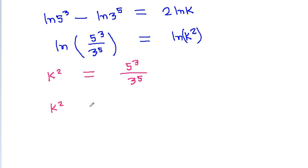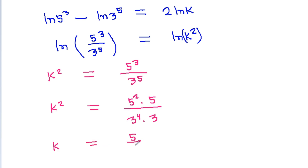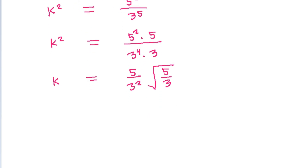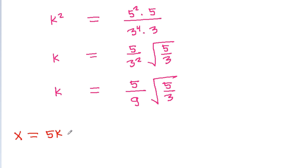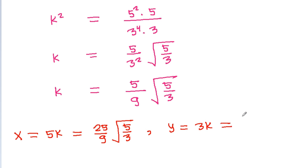Since k² = 5³/3⁵ = (5²·5)/(3⁴·3), we get k = (5/9)·√(5/3). Therefore x = 5k = (25/9)·√(5/3), and y = 3k = (5/3)·√(5/3).